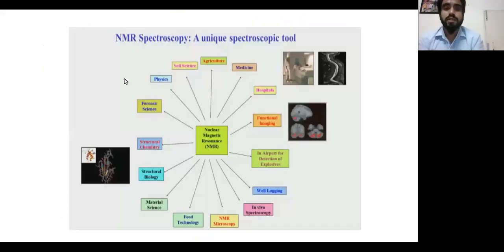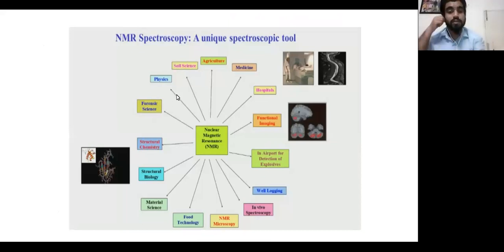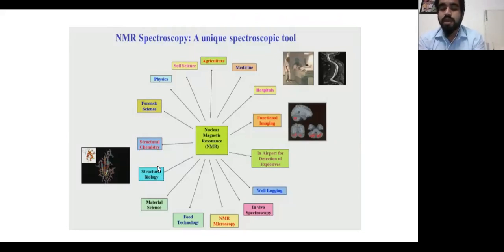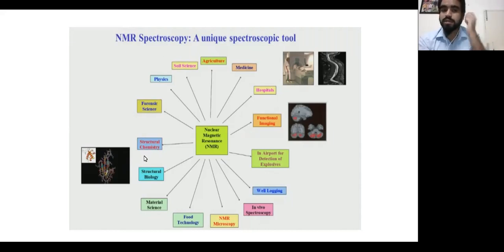NMR is a very wide technique used in almost every field — agriculture, medicine, soil science, food science, forensic science. Even MRI (magnetic resonance imaging) is NMR. Today I will cover the structural biology part, especially bio-pharma and proteins. After this presentation you will have an idea of how NMR works and what experiments you will do in your PhD or research.